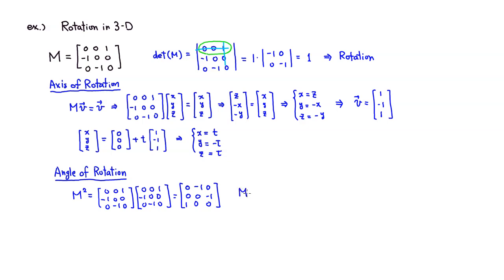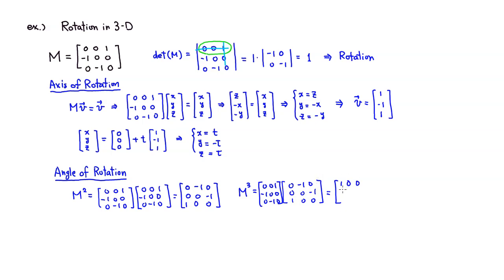What happens if you apply this rotation three times? Since I've already done M², I multiply that result [0,-1,0; 0,0,-1; 1,0,0] by M = [0,0,1; -1,0,0; 0,-1,0]. Going through the matrix multiplication, we find that M³ is the identity matrix. So applying this rotation three times brings everything back to the original place.